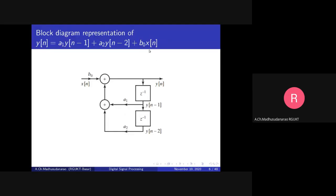This is the implementation of this particular difference equation using two adder blocks and two delay elements. In general you can implement N delays. In digital electronic circuits, delay elements can be implemented with registers, multipliers with multiplication circuits, and adders with adder circuits.